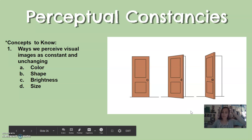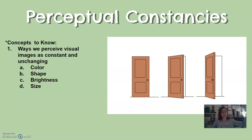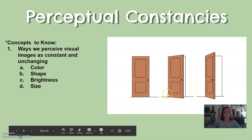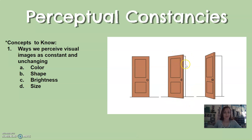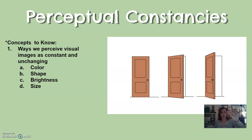Perceptual constancies mean that because we've seen something before, we understand it as the same even if our visual input is not the same. An example of shape constancy: a door opening changes from a rectangle to a parallelogram shape and back, but we still perceive it as a rectangle because we understand it has remained the same even if the visual input changed. The same happens with size constancy — if someone throws a basketball from across the court, it appears to grow as it approaches, but we perceive it as constant because we know a basketball doesn't actually grow.